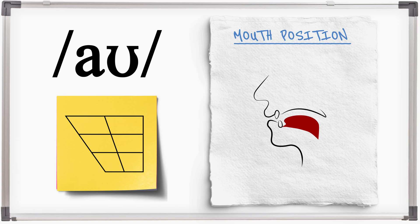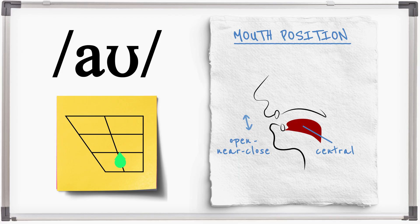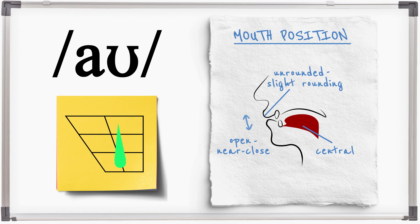AU is a diphthong vowel sound that moves from an open, fairly central position to a near close, near back position. The first part of the diphthong is unrounded and the second part can be slightly rounded or unrounded.